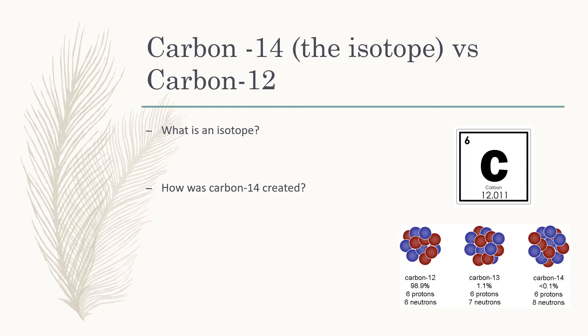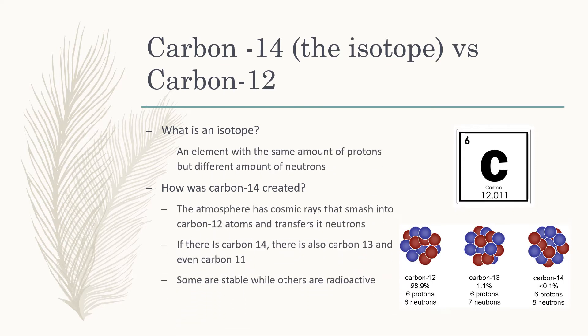However, other types of carbon do exist, like carbon-14 and carbon-13 — carbon-14 with eight neutrons and carbon-13 with seven. These different kinds of isotopes arise due to cosmic rays in the atmosphere that crash into the nucleus and transfer or take away neutrons.